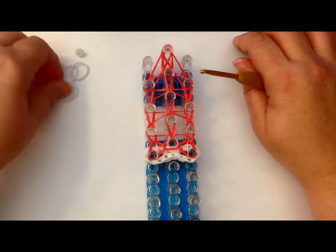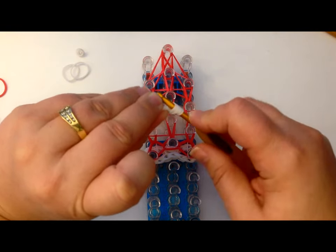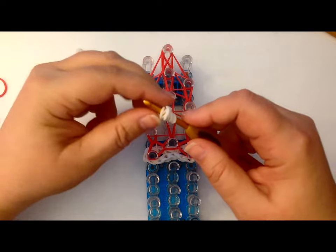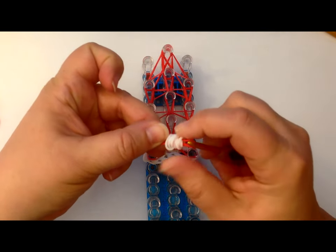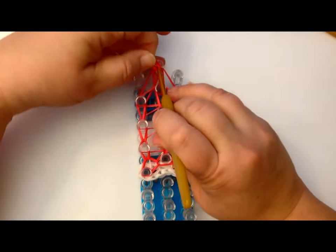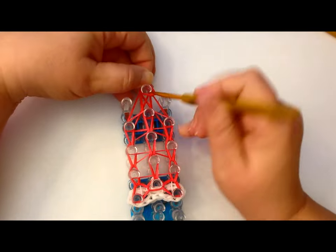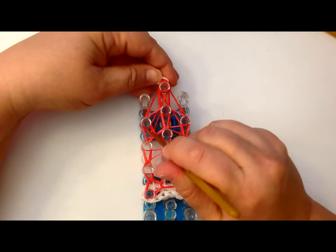Take five white bands, put them on your hook, twist once and reclaim. Then take two red bands and slide those on and reclaim. You are going to place those here on the top of your hat. We are then going to loop in these sides.